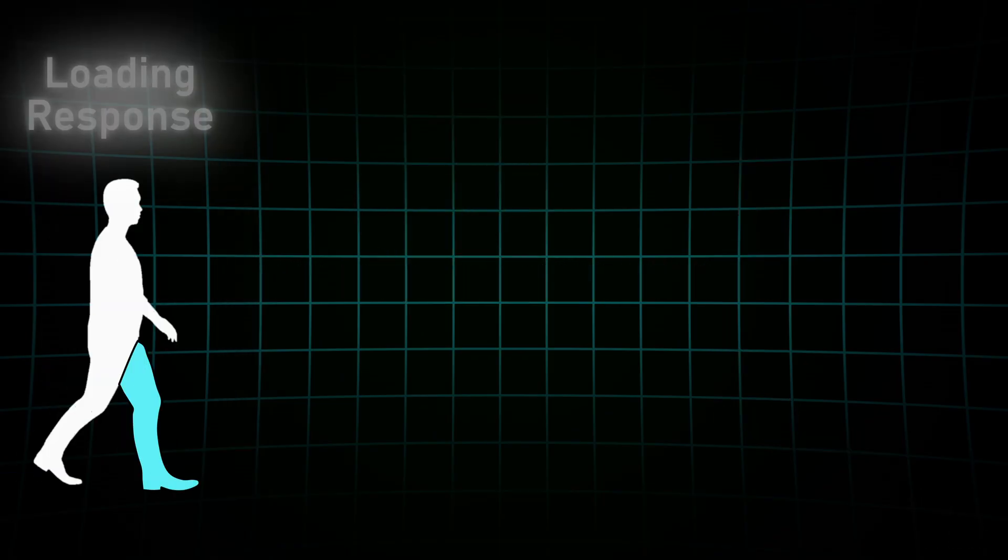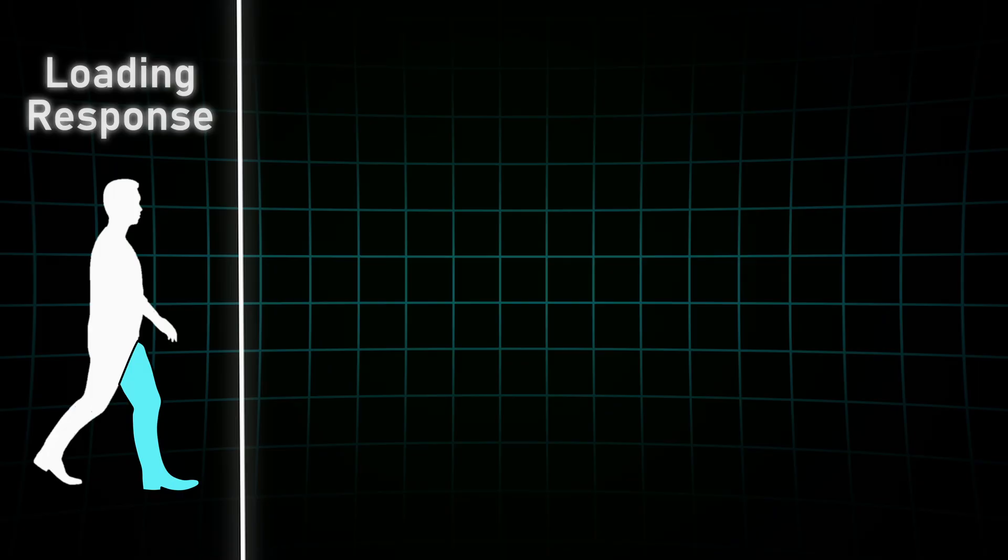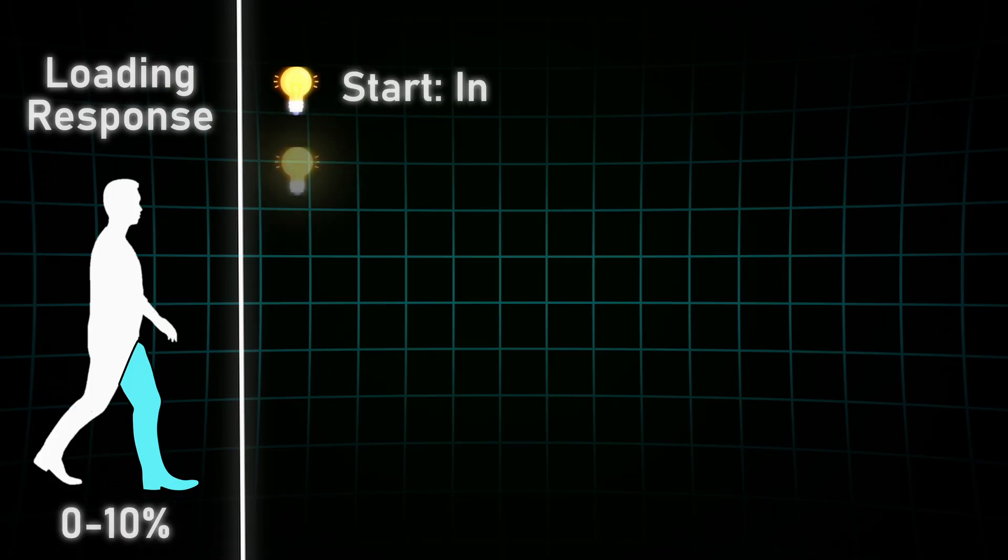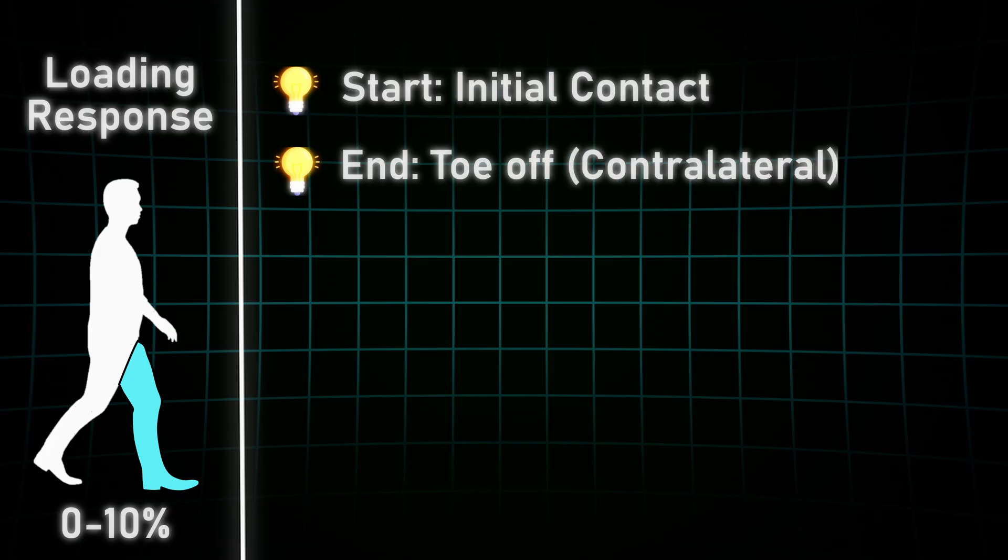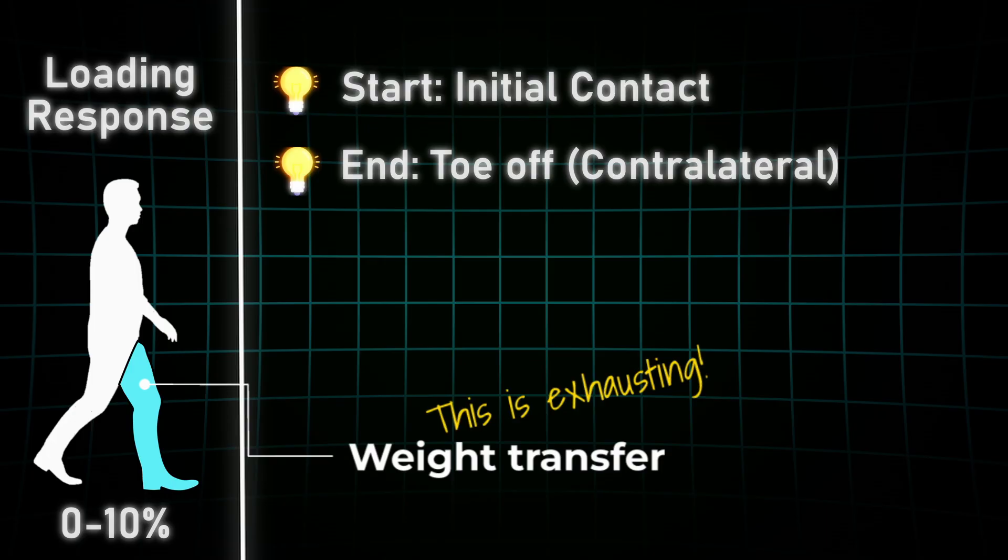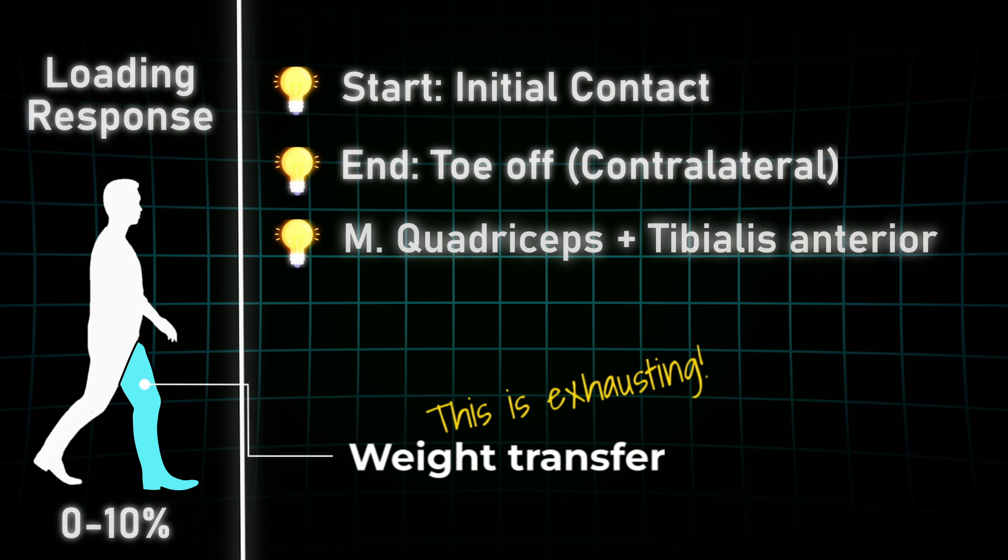The loading response phase following the initial contact is a real phase. A lot is happening here. It starts at the initial contact and it ends when the contralateral leg loses ground contact. The purpose of this phase is to load the whole body weight on the reference leg and to end the bipedal phase.